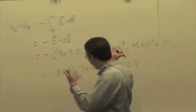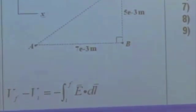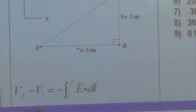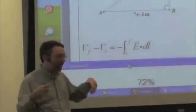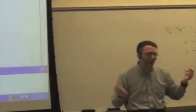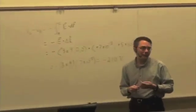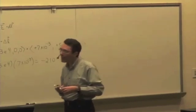Alternatively, it mathematically works out to be the same, but you can conceptually think of this as: you go from A to B, and that gives you a potential difference of negative 210. And if you go from B to C, that gives you a potential difference of 0, because the path is perpendicular to the field. Going from A to B to C or going from A to C — it doesn't matter. Path independence says we can choose any path we want.